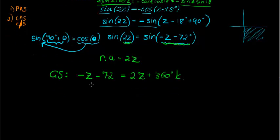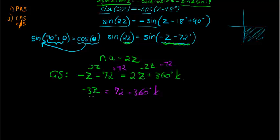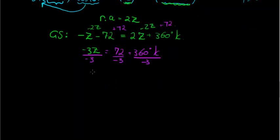Now I solve for z. To solve for z we have to subtract 2z on both sides. I get -3z, add the 72 on both sides, 72 plus 72 on both sides, so I get 3z is equal to...